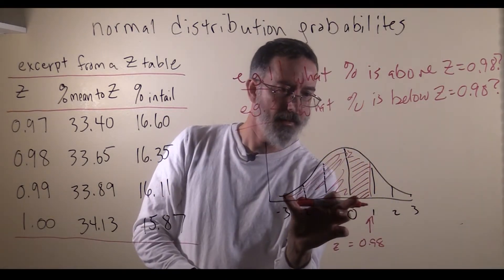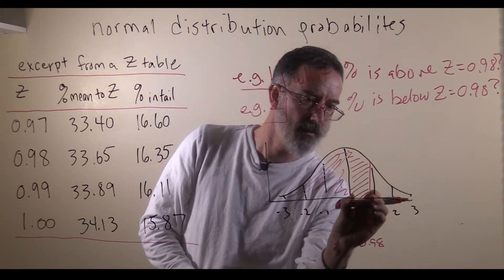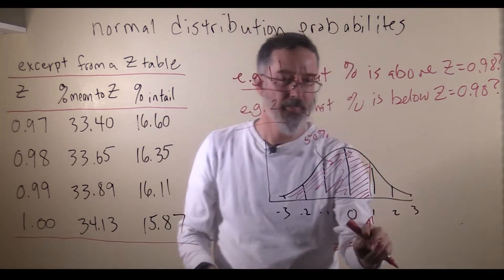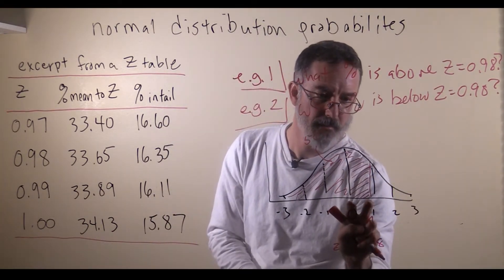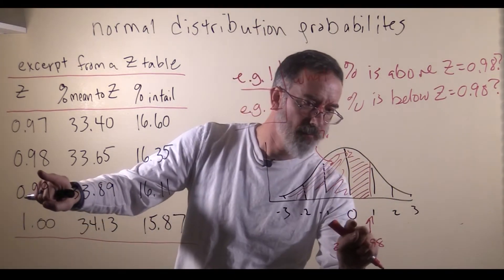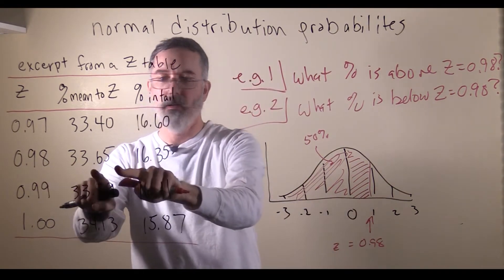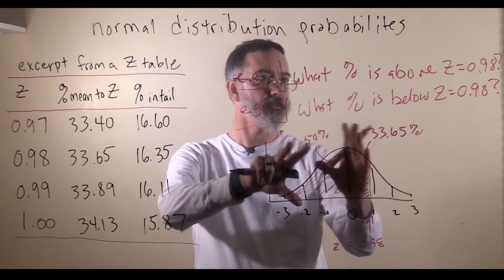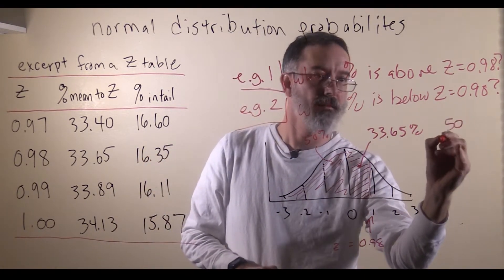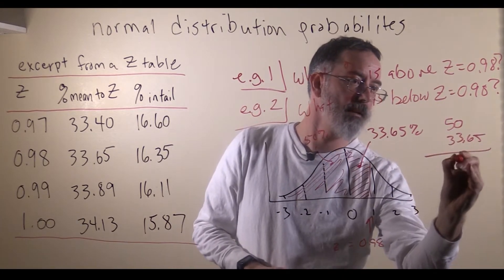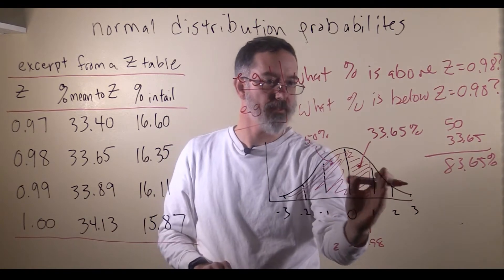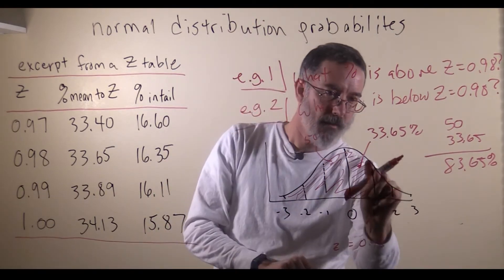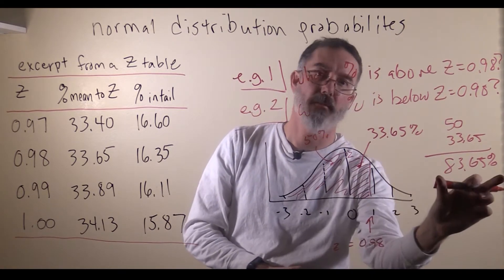One way to solve this would be to add everything below 0 to everything relevant above 0. This whole left half is 50% because it is a symmetrical distribution, so we do not even need the z-table for that. For the area between the mean and z equals 0.98, we use the z-table: that is 33.65%. Adding them together, 50 plus 33.65 gives us 83.65%. So 83.65% of this distribution is below a z-score of 0.98. You could also solve it by figuring out what percent is above and subtracting from 100 to get the same answer.